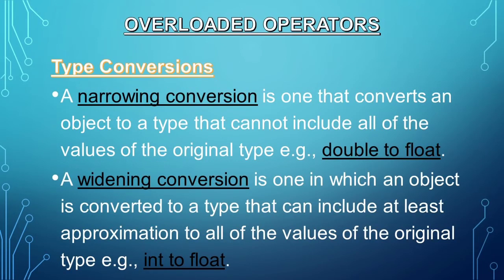Type conversions: converting one data type into another is called type conversion. There are two kinds: narrowing and widening conversion. Narrowing conversion converts an object to a type that cannot include all of the values of the original type—for example, double to float. In widening conversion, an object is converted to a type that can include at least approximations to all of the values of the original type—for example, integer to float.